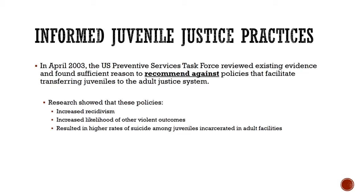In April 2003, the U.S. Preventive Services Task Force reviewed existing evidence and found sufficient reason to recommend against policies that facilitate transferring juveniles to the adult justice system. The evidence showed that policies treating juveniles as adults in the justice system caused more harm than good. Research showed that these policies actually increased recidivism, increased likelihood of other violent outcomes, and resulted in higher rates of suicide among juveniles who were incarcerated in adult facilities.